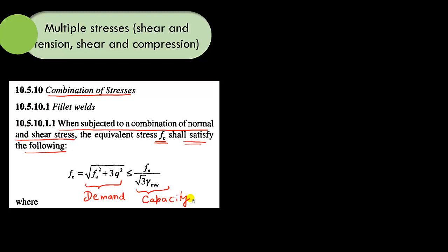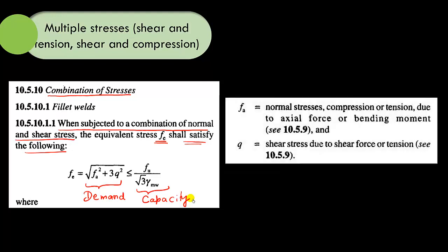In this equation, FA is the normal stress due to compression, tension, axial forces, or bending moment. Q is the shear stress generated due to shear force or tension. Using this formula we can calculate the equivalent stress when we have shear and tension present, or shear and compression present.